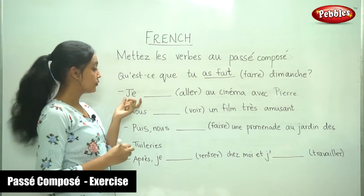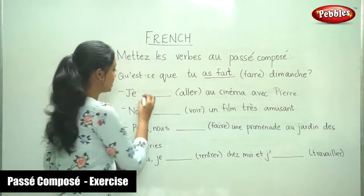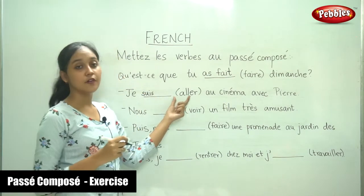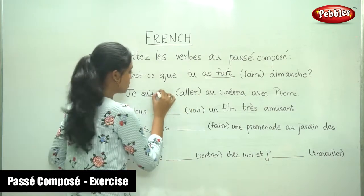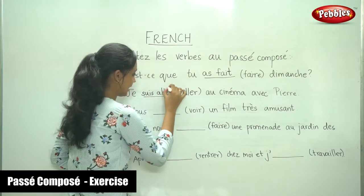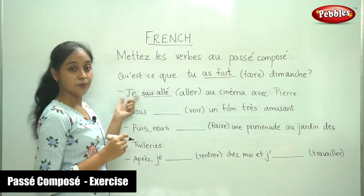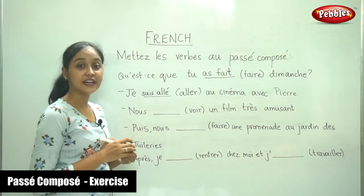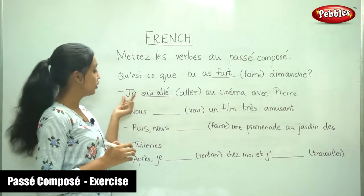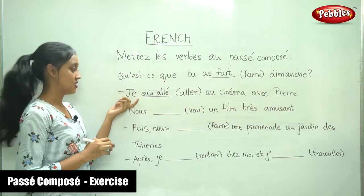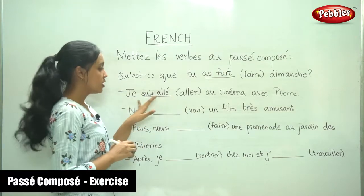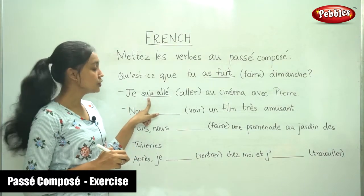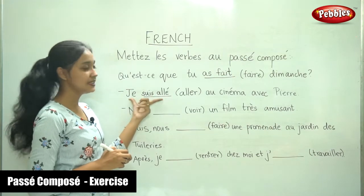For je, the être conjugation is suis. The past participle of aller: it is an -er verb, so remove -er and add an accent é. When être is the auxiliary, we need to consider the agreement of the verb with the subject. In this case it is je, so you don't have a problem. But whenever you use être as the auxiliary, you have to remember to consider the agreement.